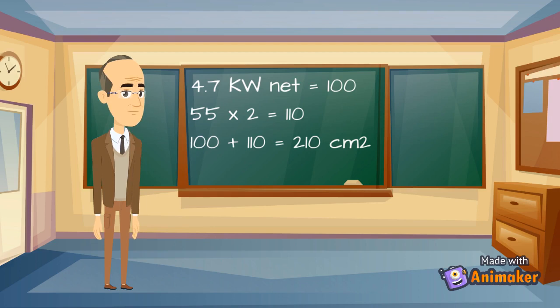Our appliance is 4.7 kilowatts net. We must add 55 centimeters squared for every kilowatt over 2.7 kilowatts. Which equals 110 centimeters squared. We add this to the 100 centimeters squared which we started with.